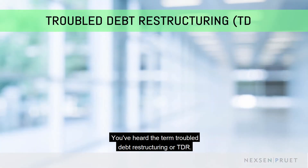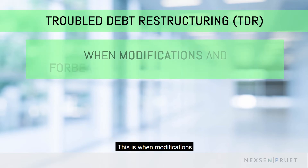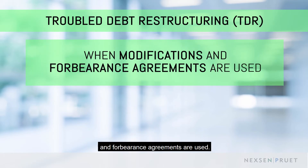You've heard the term Troubled Debt Restructuring, or TDR. This is when modifications and forbearance agreements are used.